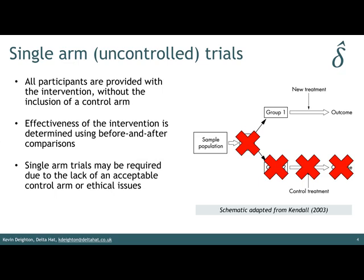So in this sort of situation, you have a single-arm trial. Very simple: you take a sample population, everybody goes into the treatment group, you have a pre-treatment measure and a post-treatment measure, and from there you'll determine the effectiveness that way. The problem with this is that it's very difficult to then determine comparative effectiveness or relative effectiveness compared with another treatment or the standard of care.